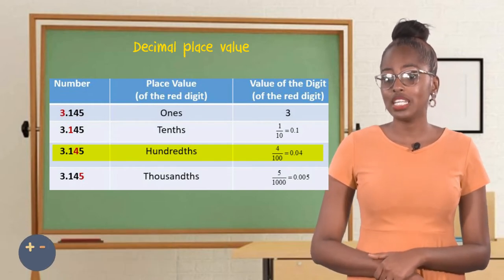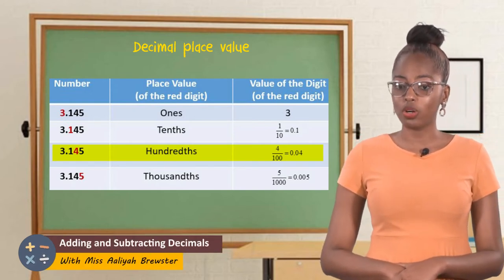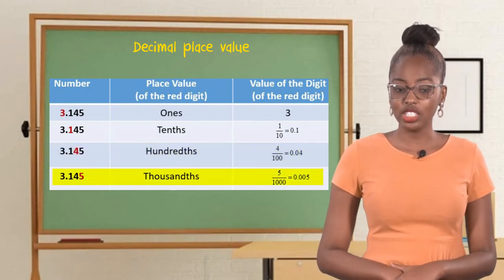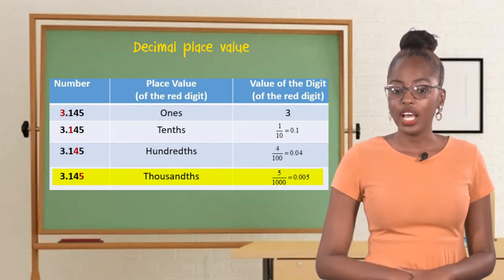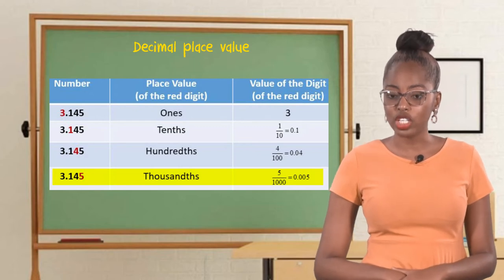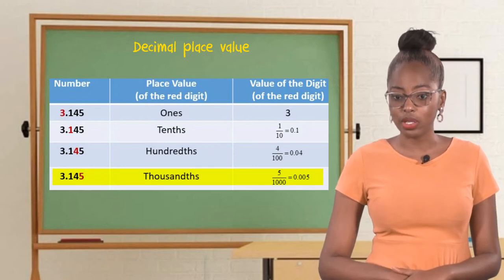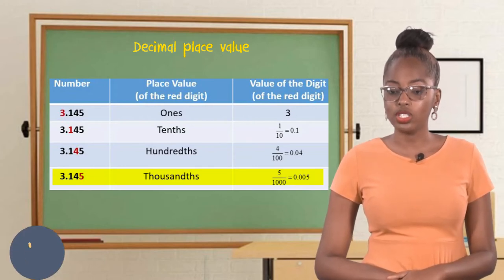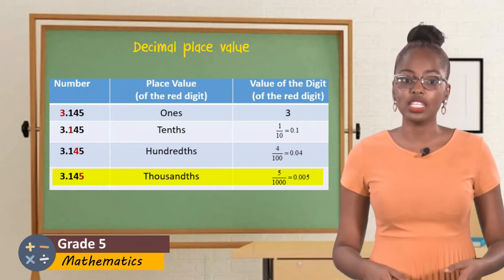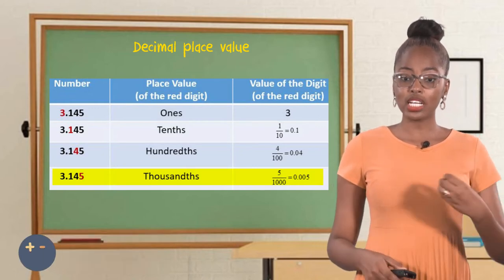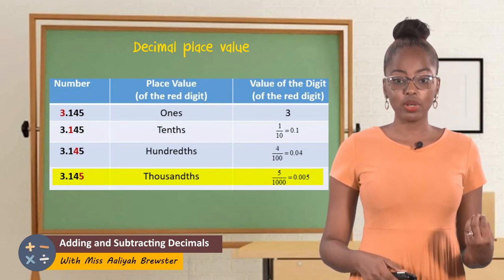The place value of the numeral four is in the hundredths place value. That place value can be represented as a fraction where we put four as a numerator and one hundred as a denominator — so that's four one-hundredths. It can also be represented as the decimal 0.04. The last digit in that number, which is five, is in the thousandths place value. That place value can be represented by the fraction five over one thousand, or it can be represented as the decimal 0.005. What you need to grasp here, boys and girls, is that decimals can actually be expressed as a fraction and also as a decimal.